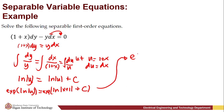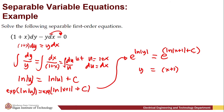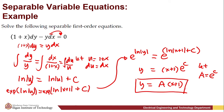To find the explicit solution, we raise both sides by the exponential to cancel the natural logarithm. We have e^(ln y) = e^(ln(x+1) + c). Since e^(ln y) = y and e^(ln(x+1)) = x + 1, and letting constant a = e^c, our explicit solution becomes y = a(x + 1). This is our explicit solution for (1 + x) dy − y dx = 0.